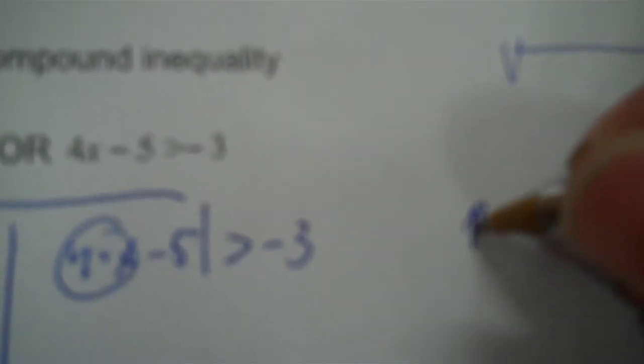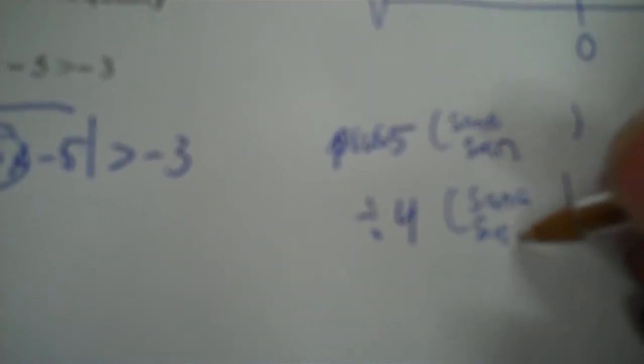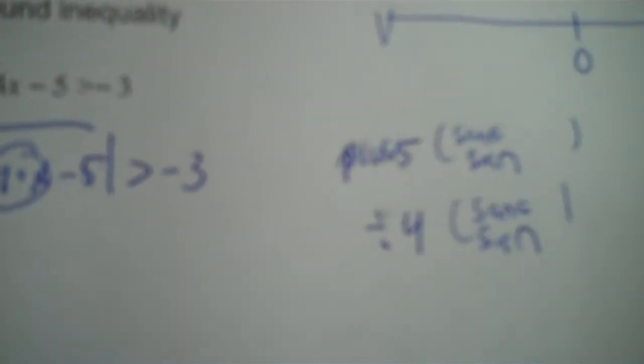Now what do we got for operations here? There's two of them: times 4 and minus 5. You're going to have to plus 5, and the sign doesn't change. Then you're going to divide by 4. Well, you're dividing by a positive, so it's the same sign. The sign only switches if you're dividing by a negative.